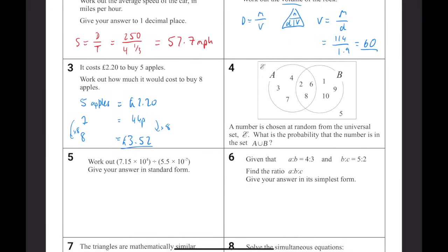A number is chosen at random from the universal set. What is the probability that the number is in the set A or B? As you can see, there are 10 numbers in total, and A or B is everything within the circles. So that is going to be 9 out of 10 because 5 is the only number that isn't in that group.